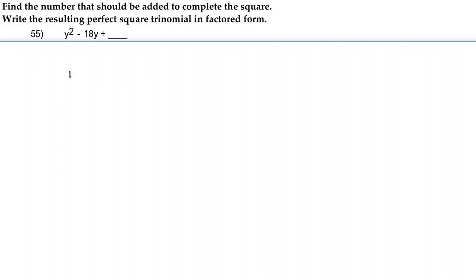We're going to use the formula b over 2 squared to find what should be in here to make this expression a perfect square trinomial.